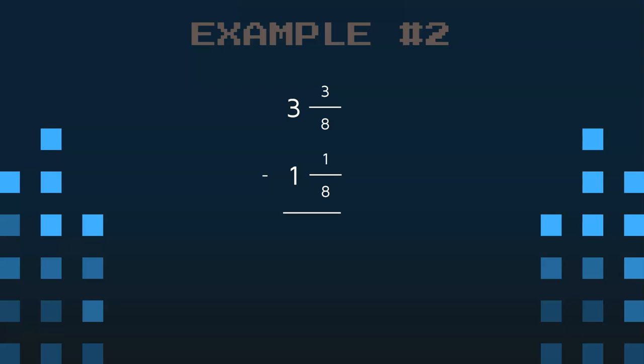Let's move on to example 2. This is a subtraction problem. Again, I'm going to start with the fractions, and I'm going to subtract 3 eighths and 1 eighth. So 3 minus 1 is 2. 2 eighths.